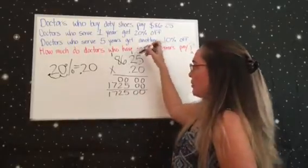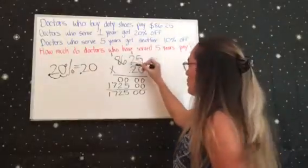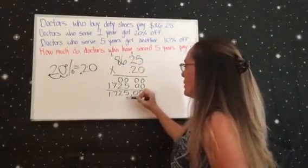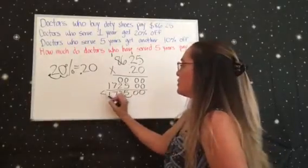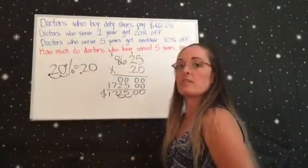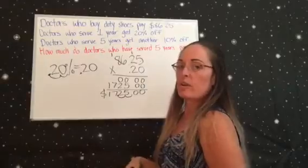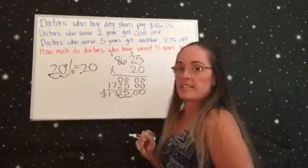So now we have 1725.00, which is a really big number, but you have to remember that you had two decimals. So you bring down the decimal and then you go over twice for the two decimals, and that leaves you with $17.25. And that makes sense because that's around 20% of the $86.25.